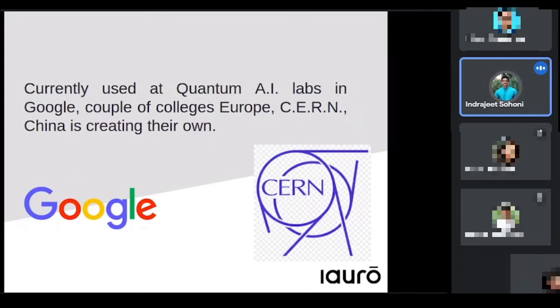Where are these big machines located? One is at Google's Quantum AI Lab, which they recently acquired two years ago. A couple are in Europe, and one is at CERN. If you don't know, CERN is the same organization that found the Higgs boson particle, also called the God particle. They have the Large Hadron Collider set up below Geneva, Switzerland. China is creating their own, which is a concern as well.